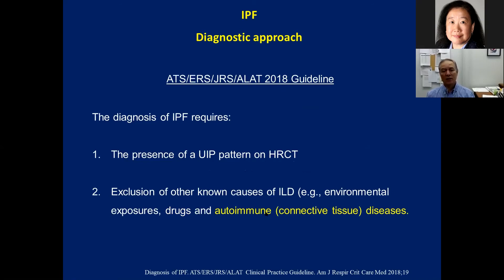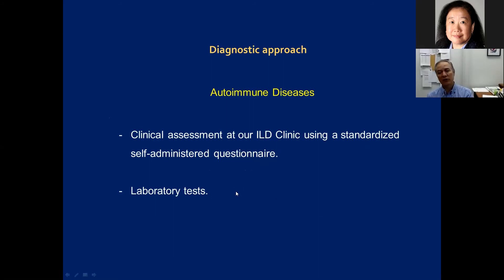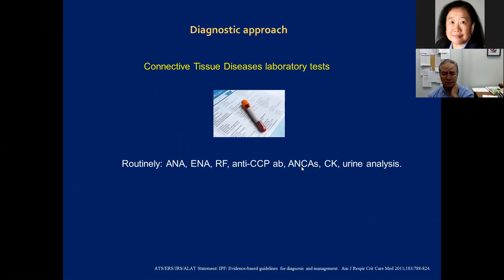The last major group that can cause ILD is autoimmune diseases. We send patients a standardized health questionnaire before clinic to ask about symptoms of connective tissue diseases, and we also order a panel of autoimmune serologic blood tests. By having all that information prepared, we hope to expedite the assessment and determine whether the lung disease is due to any known cause, or whether it could be IPF.